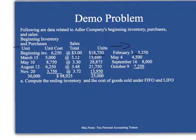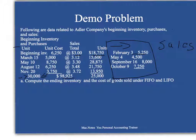Over here are the sales figures. What we're concerned about is what we had available for sale. In total, we had $30,000 units available for sale — $6,250, $5,000, $8,750, $6,250, and so on — totaling $30,000 units. The total value of everything available was $98,925, and we ended up selling 25,000 units.